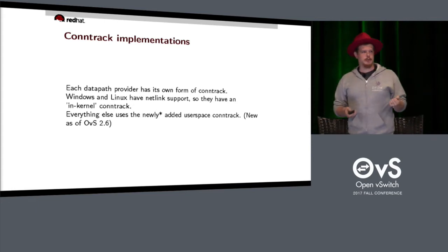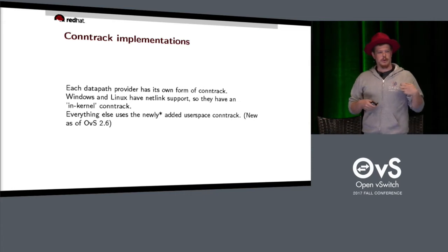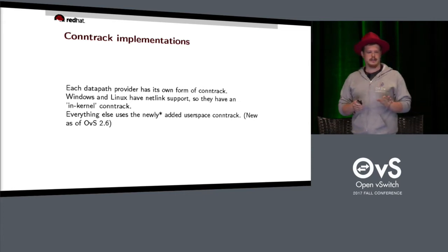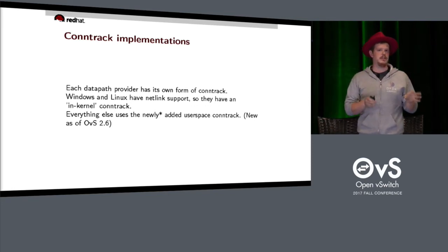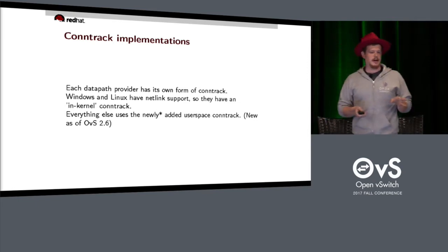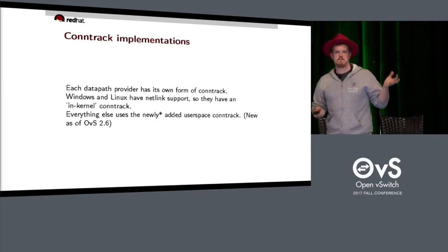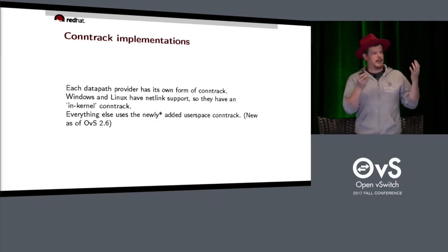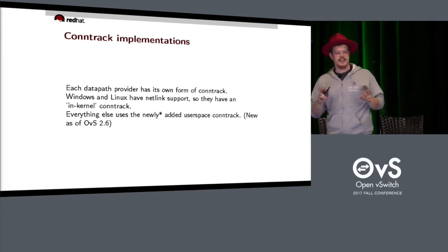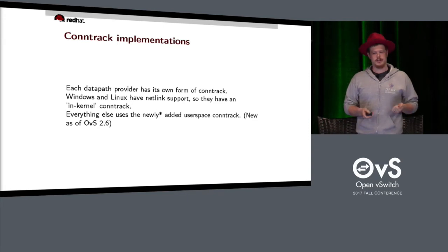There are many conntrack implementations that OVS makes use of — three that I know of. Every datapath type has a conntrack. Windows and Linux use the Netlink interface and each have their own conntrack. The Linux kernel conntrack has been there for 26 years. The Windows conntrack code is in the tree in datapath Windows. The NetDev datapath uses the newly added user space conntrack, added in 2.6, but only just starting to see a lot of usage.